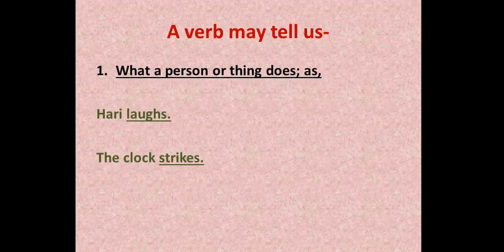A verb may tell us what a person or thing does. For example, Harry laughs — what is the person doing? He is laughing, so 'laughs' is a verb. The clock strikes — so 'laughs' and 'strikes' are verbs. These are verbs.